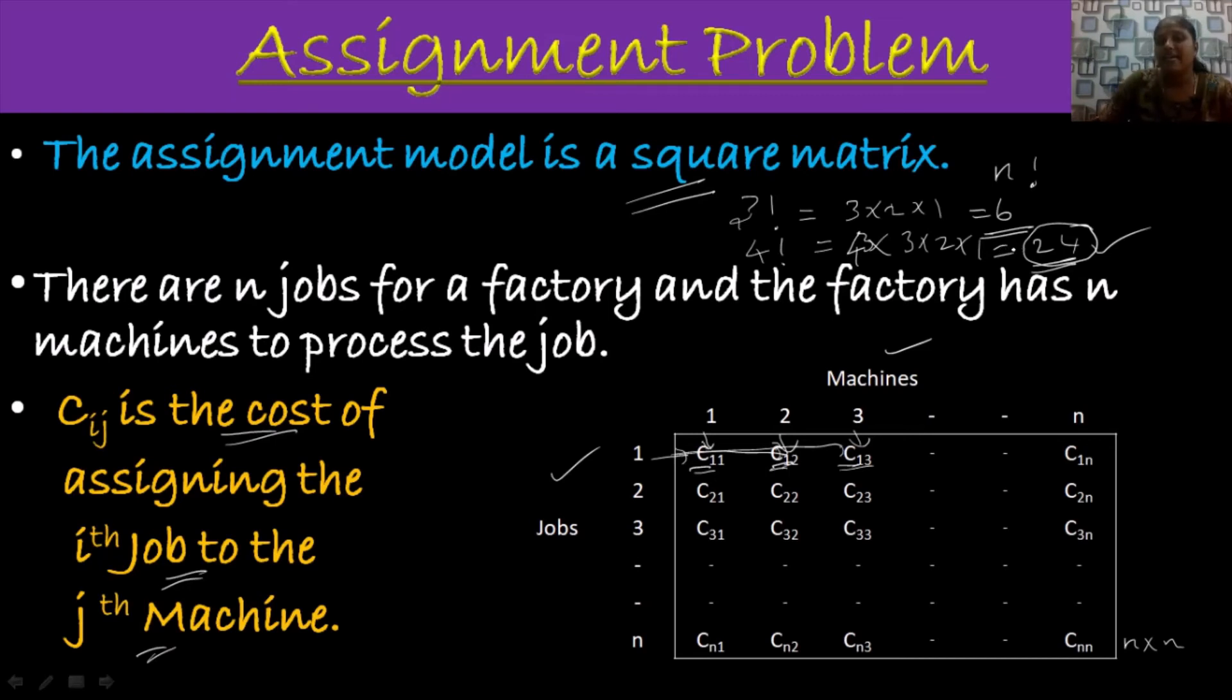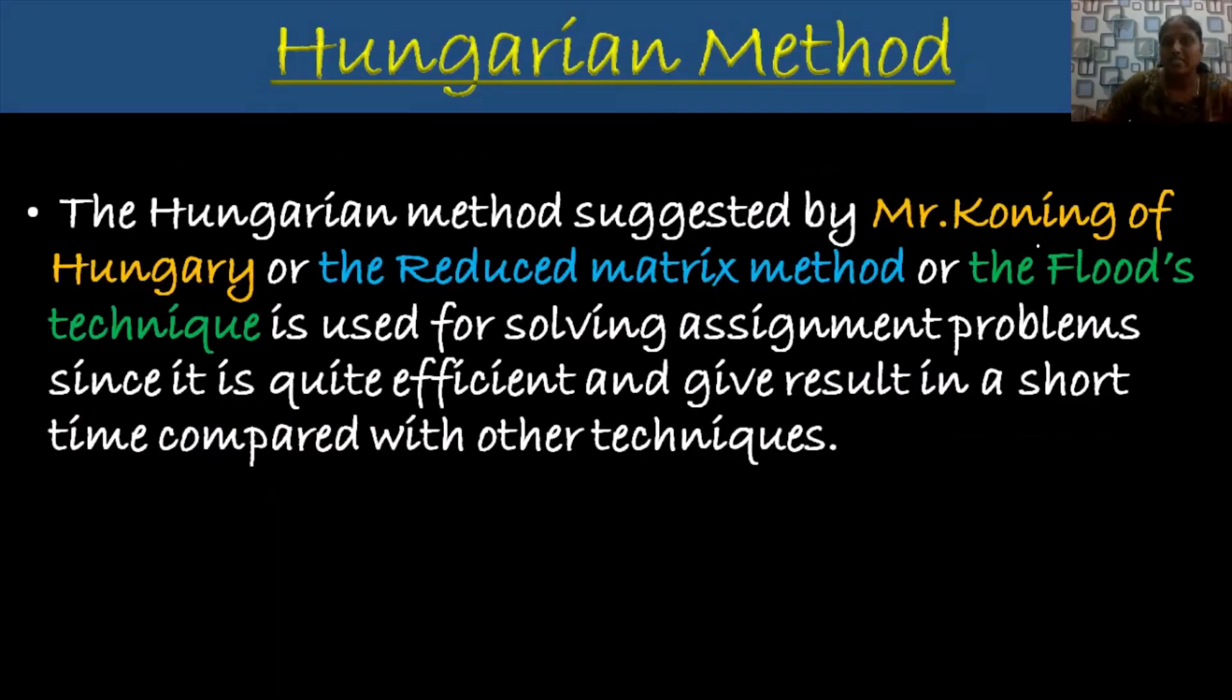So we need an effective technique for solving assignment problem. So then, we have to choose the Hungarian method. So it is suggested by Mr. Konig of Hungary. The other name for Hungarian method is reduced matrix method or flood's technique, which is used to solve the assignment problem because it is very efficient and it is giving the result in a short time compared with other techniques.